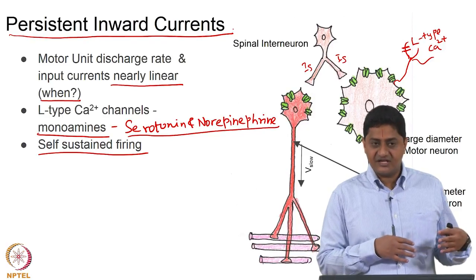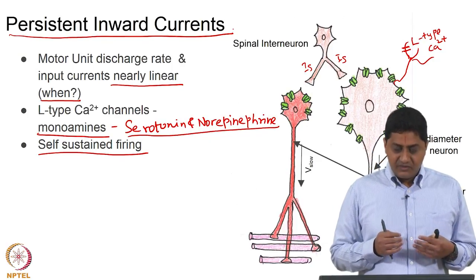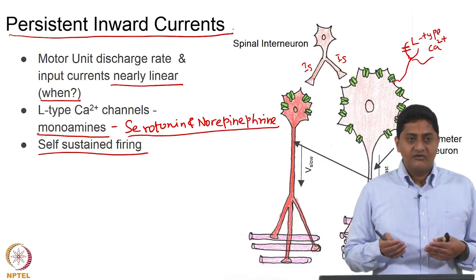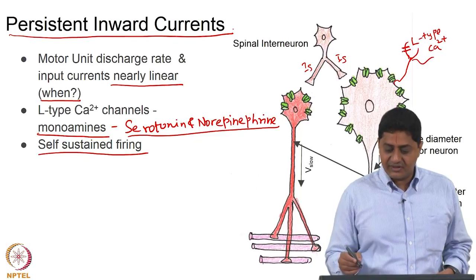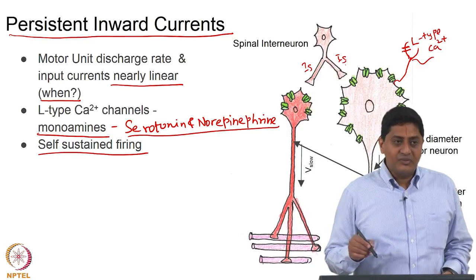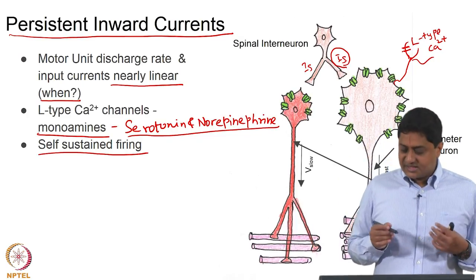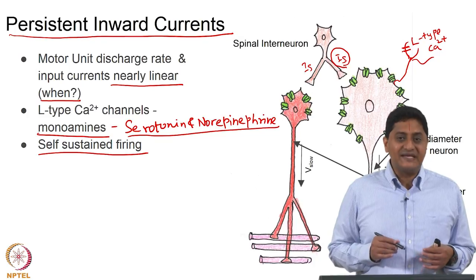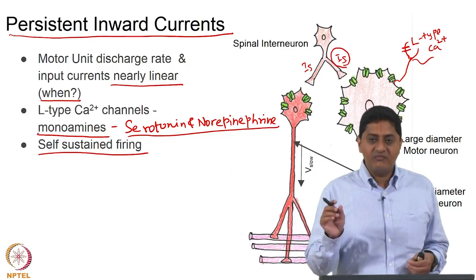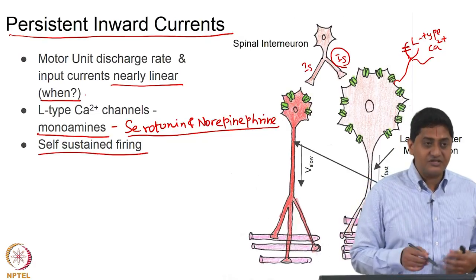Calcium is a cation, and this inward current causes firing that is known to sustain for relatively long periods. This firing is called self-sustained firing, and this inward current is called persistent inward current. Persistent inward current is the response of motor neurons to the arrival and influence of monoamines — serotonin and norepinephrine — through L-type calcium channels. This is linear in the absence of monoaminergic input, but in its presence, the response becomes non-linear.